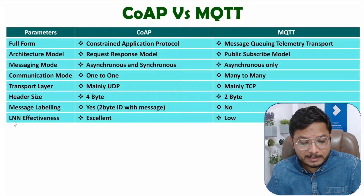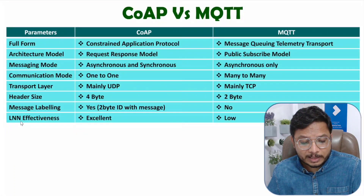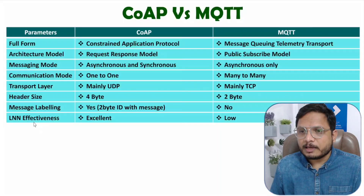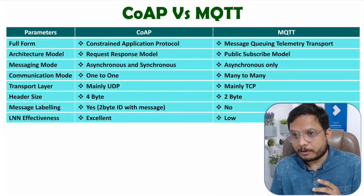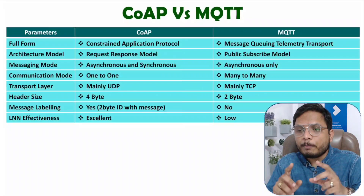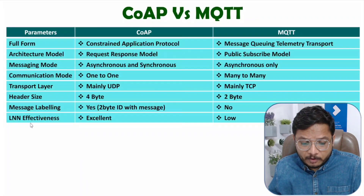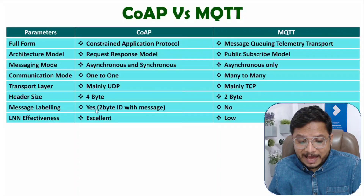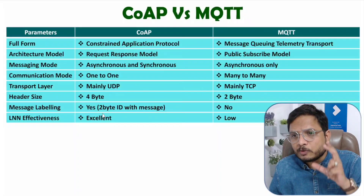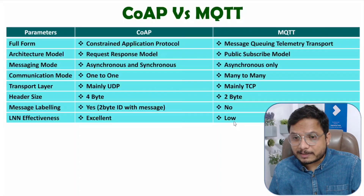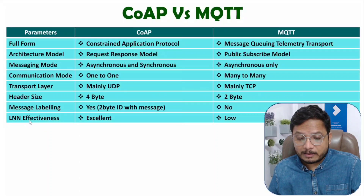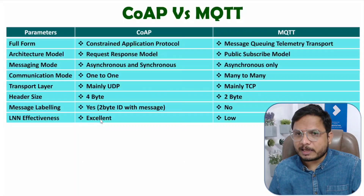The next parameter is LNN Effectiveness, which means how suitable the protocol is for low-power lossy networks. When it comes to low-power lossy networks, the performance of CoAP Protocol is excellent. But in low-power lossy network conditions, MQTT Protocol does not give proper performance, so its effectiveness is less. With CoAP, effectiveness with LNN is excellent.